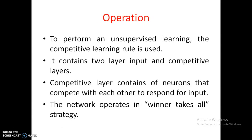To perform unsupervised learning, the competitive learning rule is used. As already discussed, the competitive learning rule contains two layers: one is the input layer and the second is the competitive layer — generally not called the output layer. In those layers, however many neurons there may be, only one neuron will fire at a time and all other neurons will keep quiet. There is competition among all those neurons and one neuron will win, and that neuron only fires.